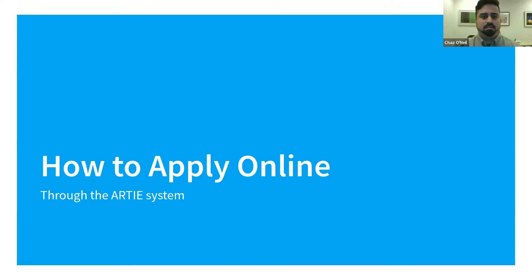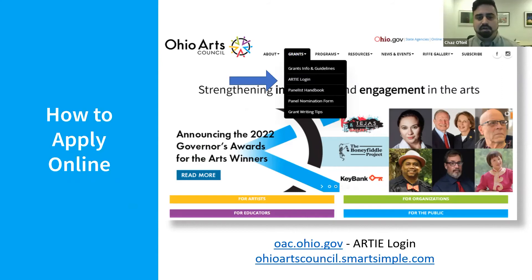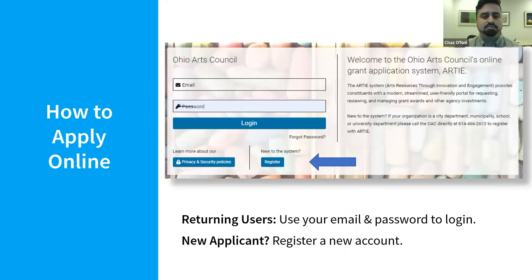Let's proceed with the next portion on how to apply to the ADAP program if you would like to apply on your own. We're going to revisit the OAC home screen at oac.ohio.gov. Go under the Grants tab and select the RD login button at the top. You can also directly find the RD website by visiting ohioartscouncil.smartsimple.com. If you are a returning user, you can enter your email and password on the login screen. If you are new to RD, you will need to register a profile — register as an organization or individual. For purposes of this webinar, we're going to register as an individual.